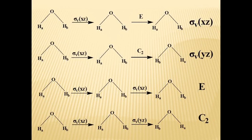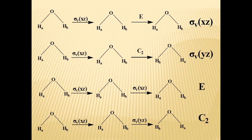Now the third element from the left column is σV(XZ), operated on the initial molecule, then followed by E, C2, σV(XZ), and σV(YZ). In the first result, if σV(XZ) is operated there is no change because it is the molecular plane, and followed by identity again no change, so the result is σV(XZ). σV(XZ) followed by C2: the 180-degree rotation changes their positions, and here it seems as if C2 has been operated.